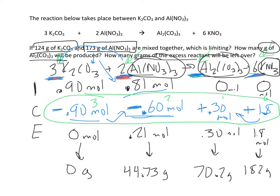All right, when I convert all these to grams, what I get is 44.73 grams of my excess reactant left over. I end up producing 70.2 grams of this chemical, 182 grams of this chemical. And that tells me the whole story.